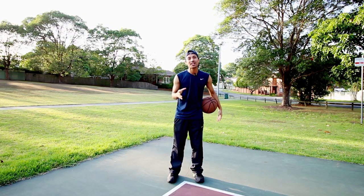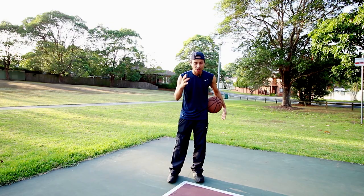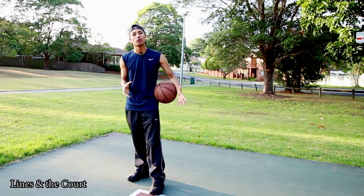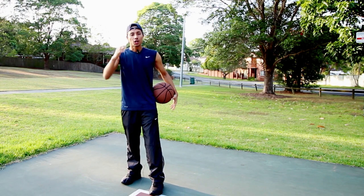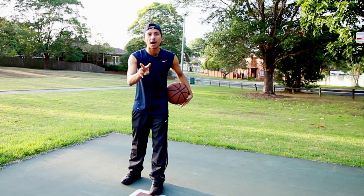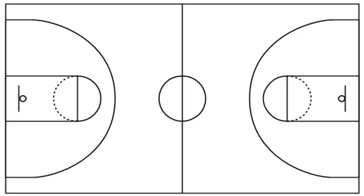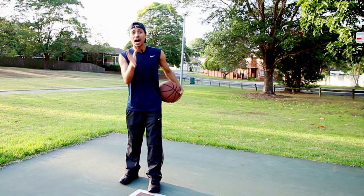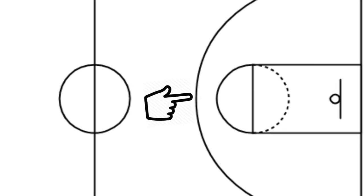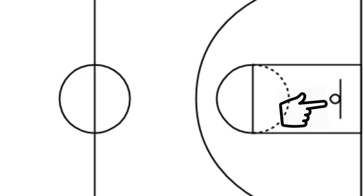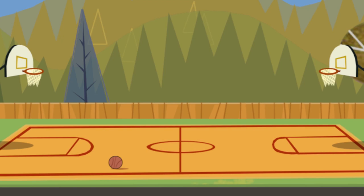Now let's talk about lines and the court. The rectangular floor where basketball is played is called the court. The court is divided into two halves by the mid-court line, also known as the half-court line. Each half has a three-point arc, a free throw line, and a basket with a board.